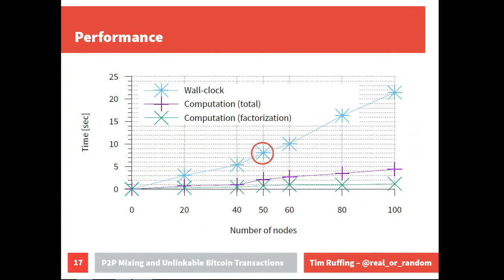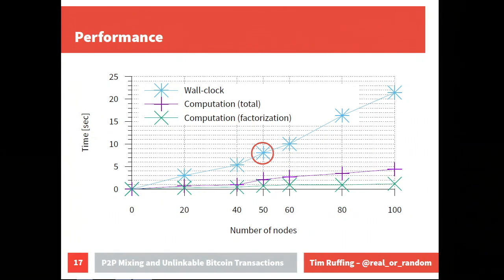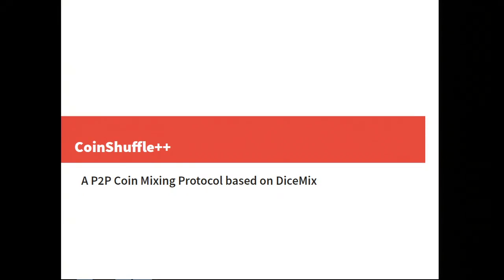We did a proof-of-concept implementation. With 50 honest participants, the protocol completes in seven seconds. In comparison, our own CoinShuffle protocol from 2014 took almost three minutes with the same 50 participants — a very large improvement.